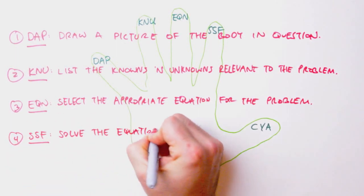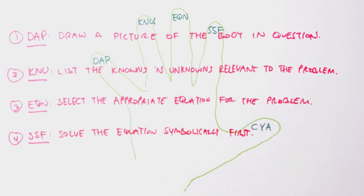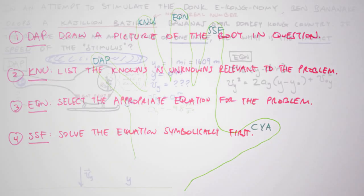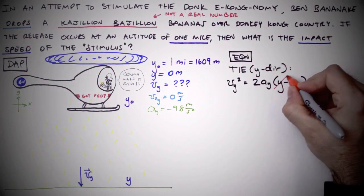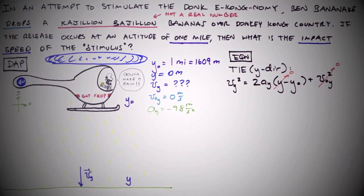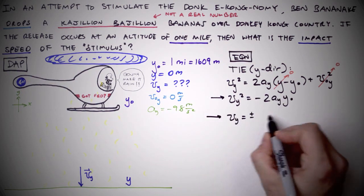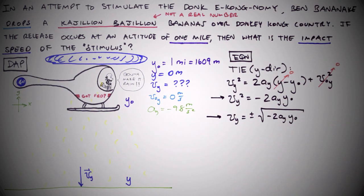Step 4. Solve the equation symbolically first. Numerical values should only be inserted once the equation has been solved for the unknown. Terms will often cancel, simplifying solutions, and much physical insight about our world can be gained from delaying the gratification that comes with plugging and chugging.